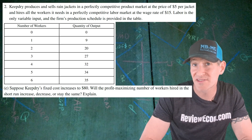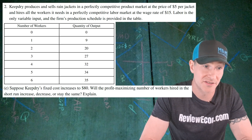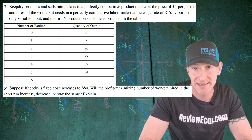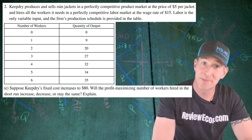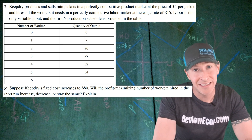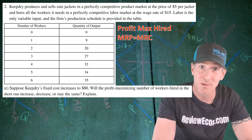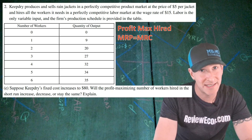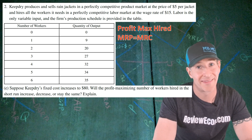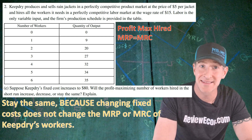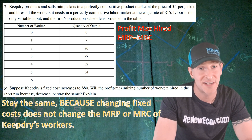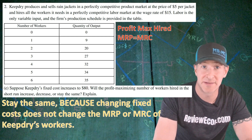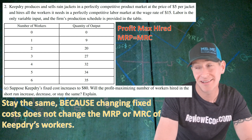We are then told Keep Dry's fixed costs increase to $80, and we are asked if the profit-maximizing number of workers will increase, decrease, or stay the same. Remember, you always hire until the marginal revenue product equals the marginal resource cost. The marginal revenue product of these workers didn't change, nor did the marginal resource cost. So the answer is stay the same, because changing fixed costs does not impact the marginal revenue product or marginal resource cost of Keep Dry's workers. If you have that answer, you get your last point.